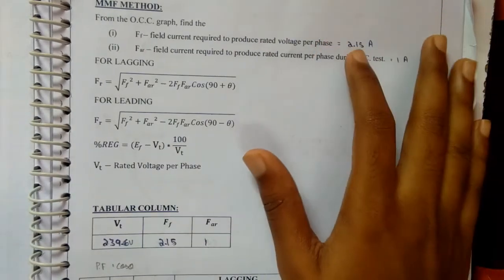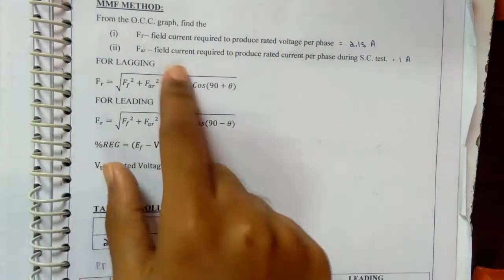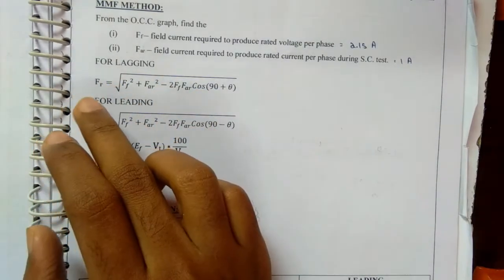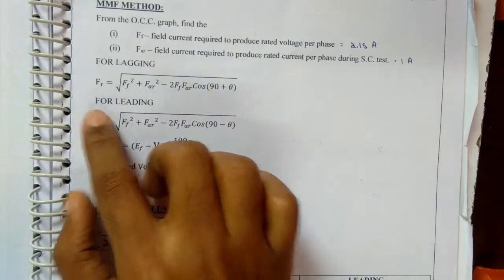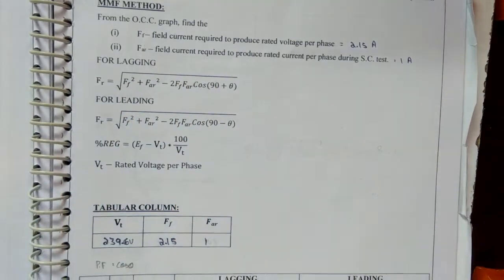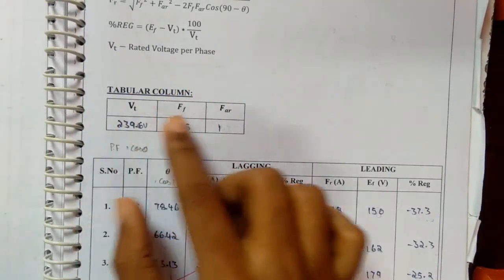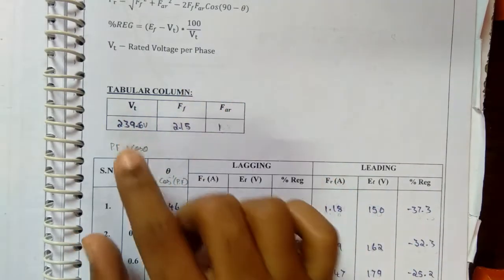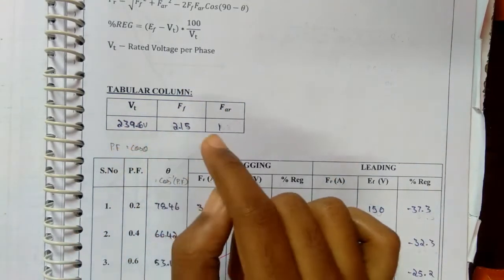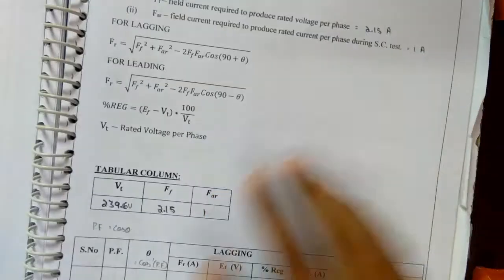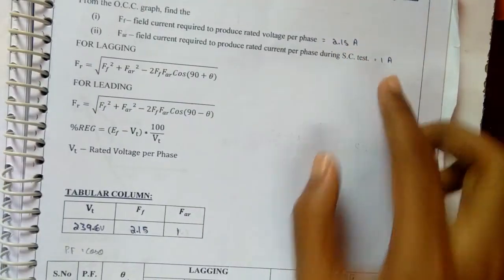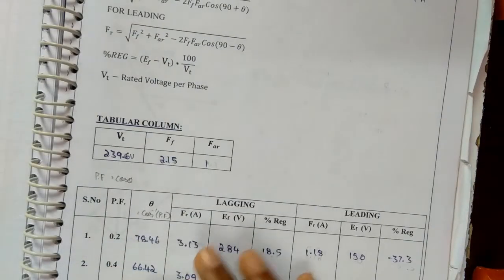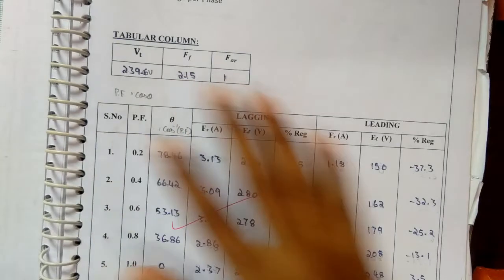So after finding these two values, for lagging we are going to substitute the values in this formula. And for leading, in this formula. So the tabular column will be VT, FF, and FAR. VT, I have shown you that value will be 239.6. And FF and FAR will be 2.15 and 1A. So this is the tabular column.